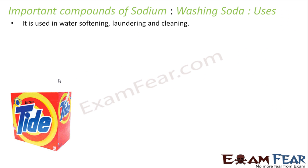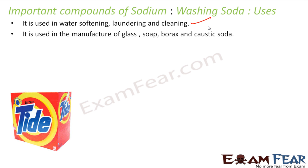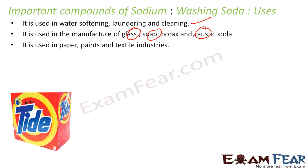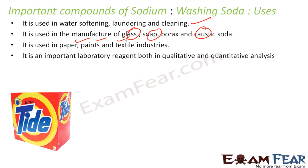Uses of washing soda: it is used for cleaning and softening water for laundry purposes. It is used in the manufacture of glass, soap, and caustic soda. It is also used in the paper, paint, and textile industries, and it is an important laboratory reagent.